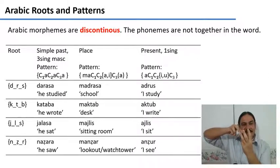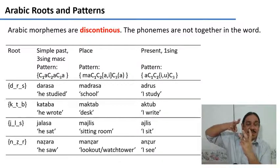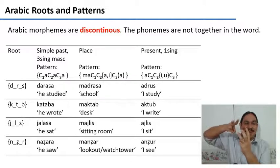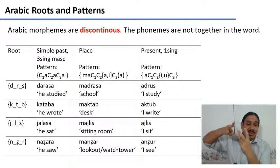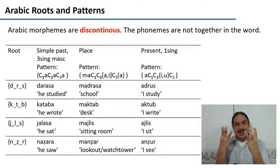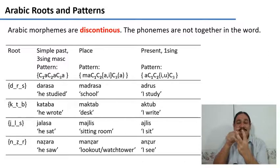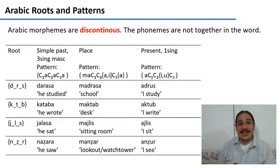The root K-T-B has to do with writing. When you interleave it with the pattern, you get 'Kataba' — he wrote. Likewise, J-L-S is a root having to do with sitting; when you interleave these two, you get 'Jalasa' — he sat. And the root N-Z-R, related to seeing and watching, when interleaved with the past tense pattern, gives 'Nazara' — he saw. As you can see, both the root and the pattern appear disjointed in the word. The sounds D-R-S are not next to one another in 'Darasa,' but they belong to the same morpheme — the same discontinuous morpheme. This is how you construct words in Arabic with discontinuous morphemes, and it works throughout the grammar.